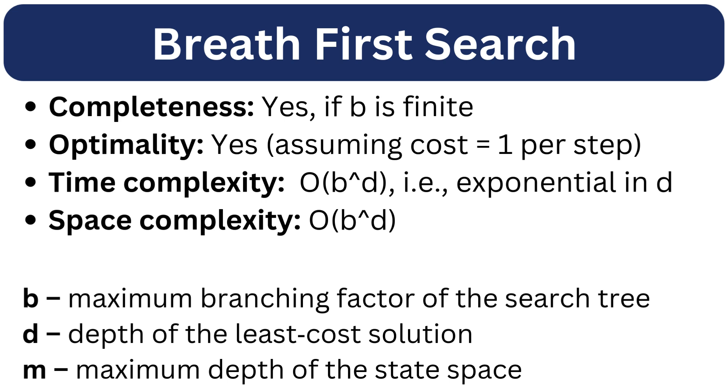Now let's discuss some of the properties of breadth-first search. Breadth-first search is complete. It guarantees finding a solution if one exists, provided that the branching factor is finite. BFS is optimal if all edges have the same cost, as it always finds the shortest path. In BFS, both time and space complexity are exponential.